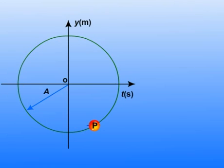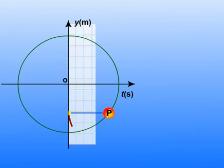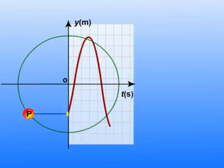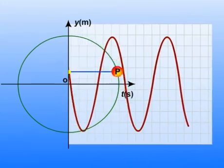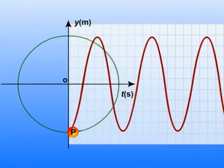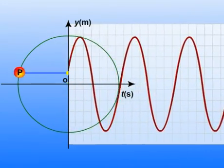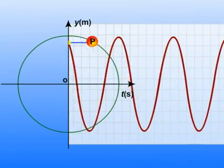Look at the projection of the reference particle P on the vertical diameter of the circle. What do you see? As the reference particle P moves along the reference circle, the projection P' in effect oscillates along the vertical diameter. Look at it carefully.